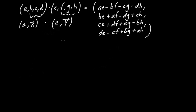To introduce the dot product and the cross product, all we're really going to do is have a close look at this multiplication formula. So let's look at the new scalar component that arises when I multiply (A, B, C, D) by (E, F, G, H), which is going to be AE minus BF minus CG minus DH.